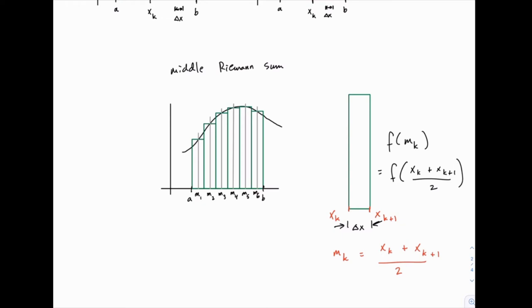So we might write this as f of x sub k plus x sub k plus 1 divided by 2. Then, the integral can be approximated, if this is the function f of x, the integral of f of x from a to b, approximately equal to the sum, from k equals 1 to n, of f of x sub k plus x sub k plus 1 over 2 times delta x.